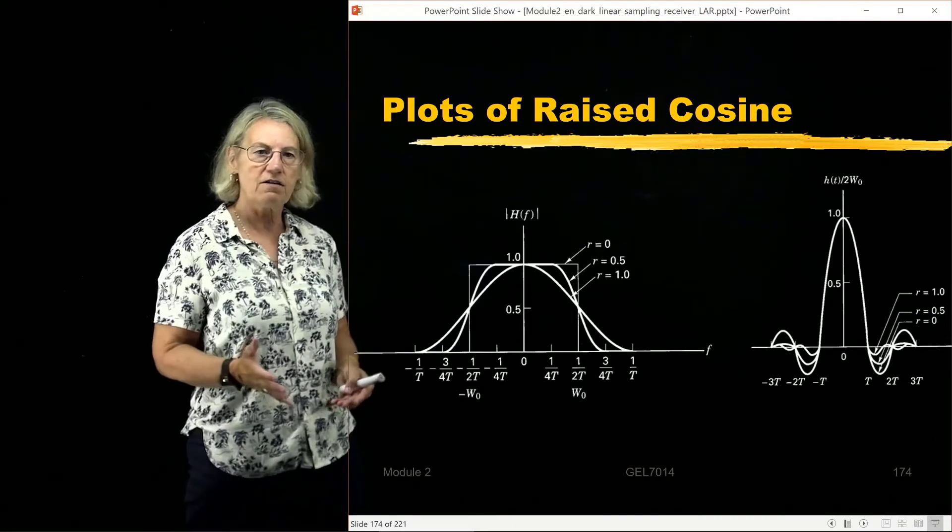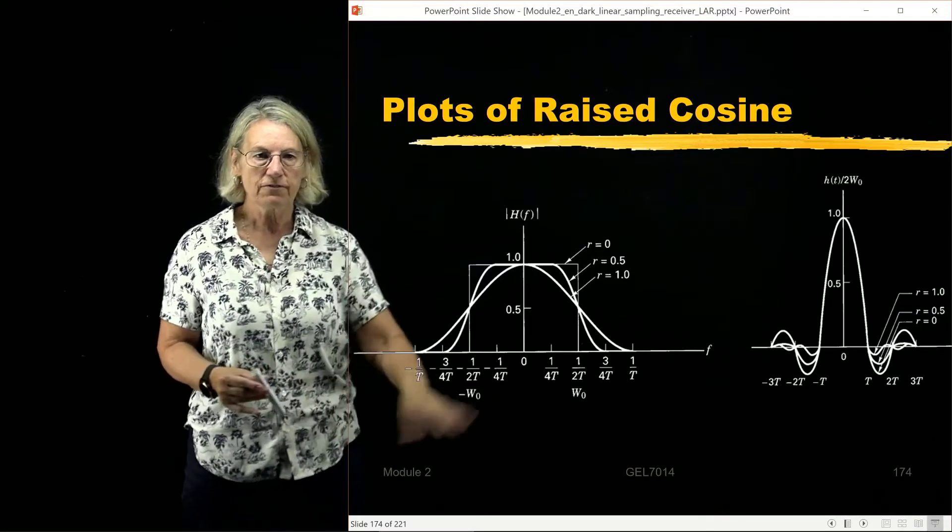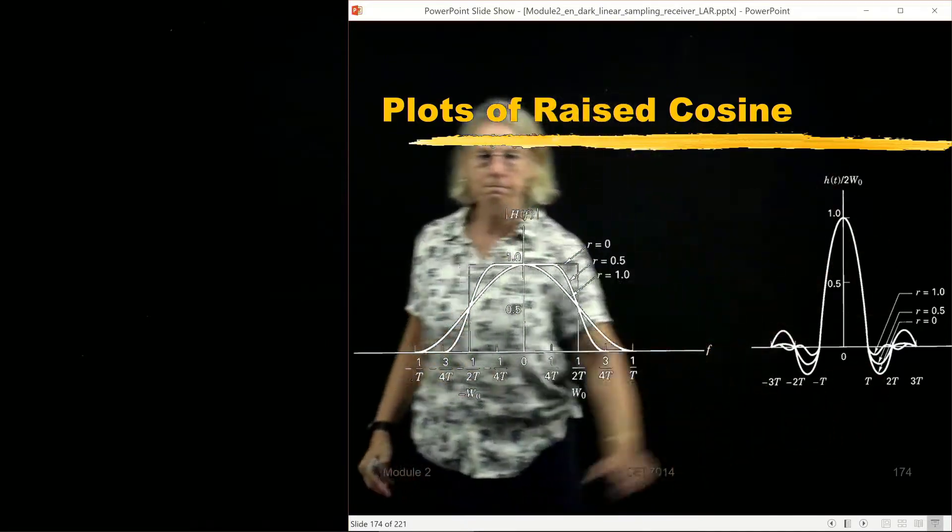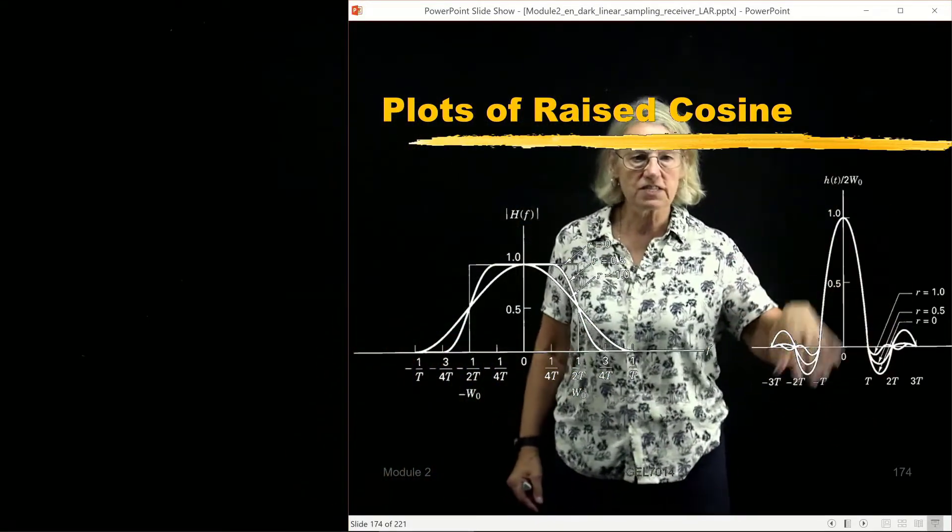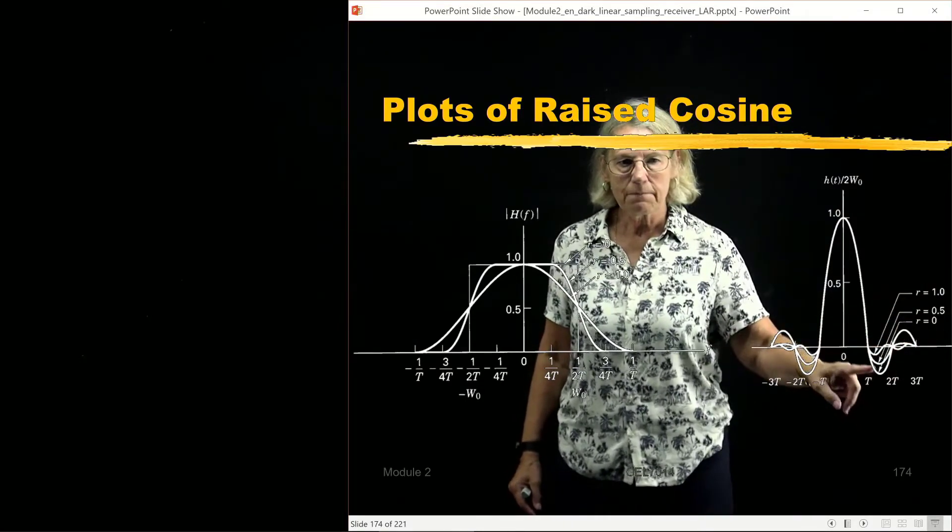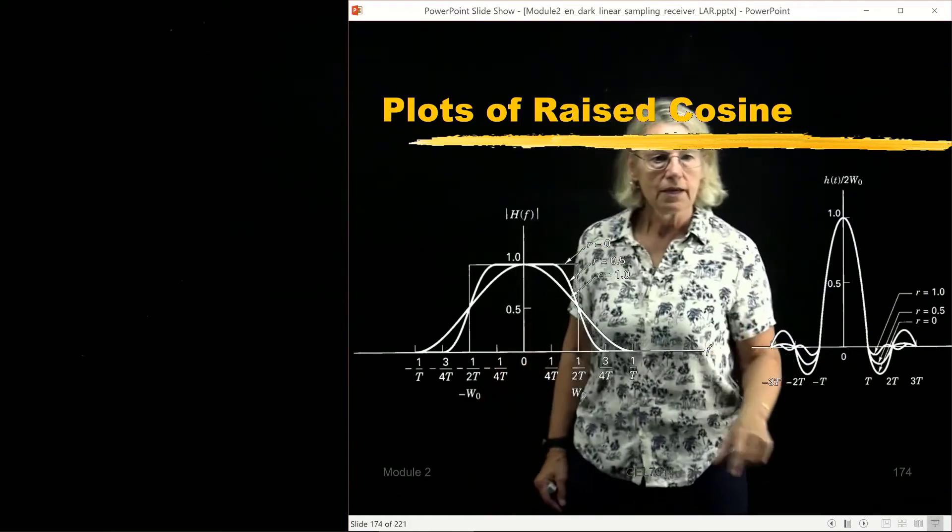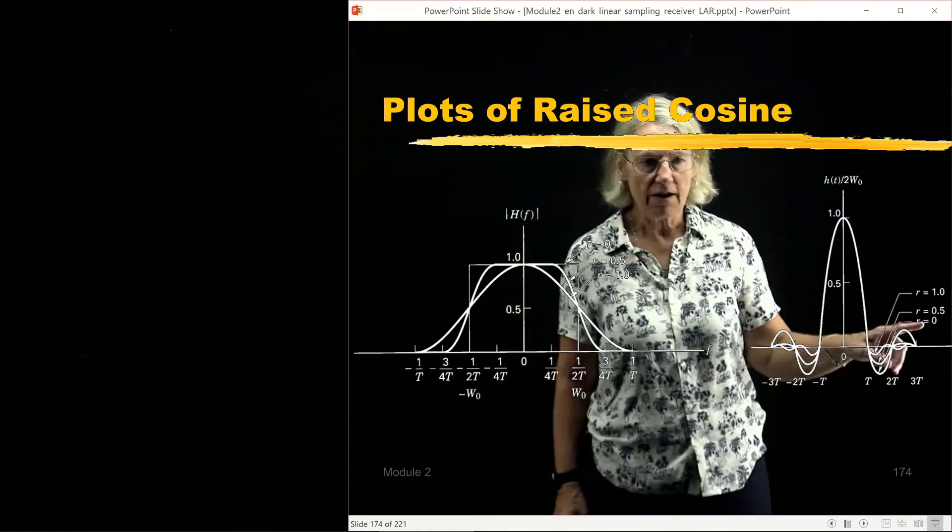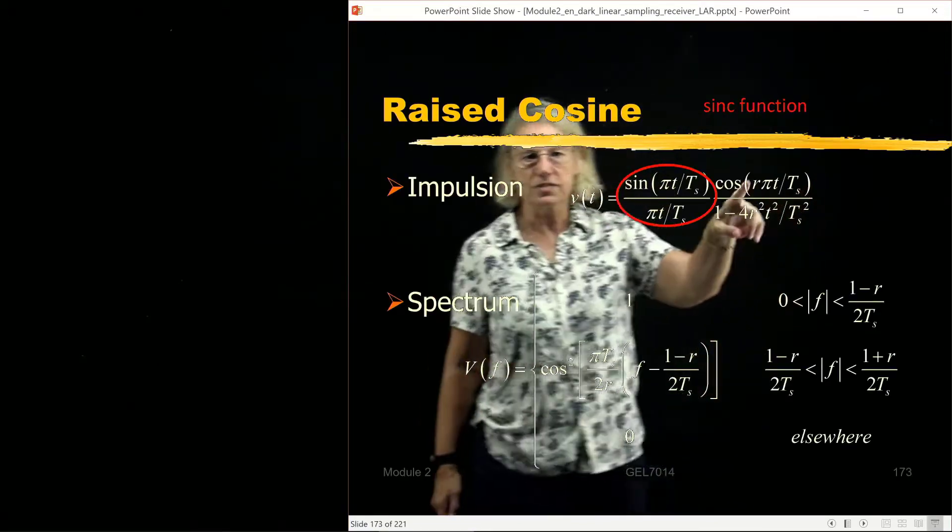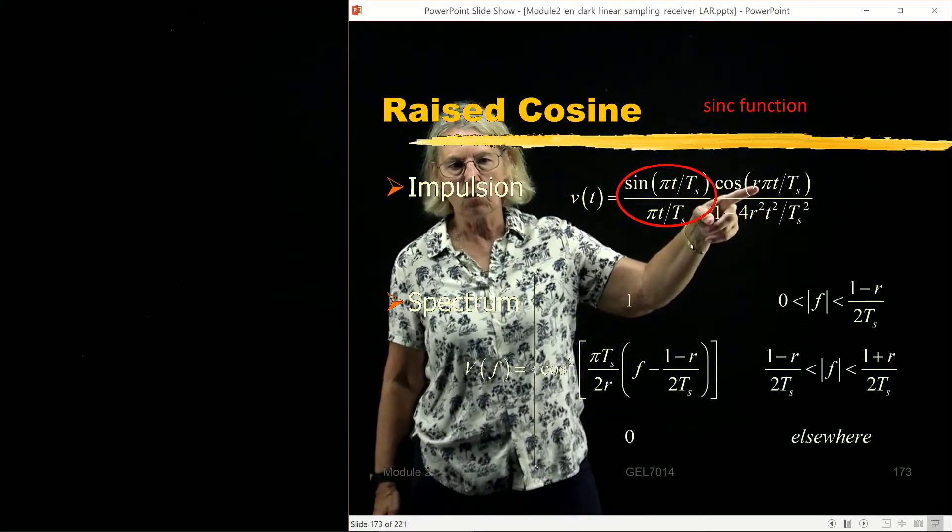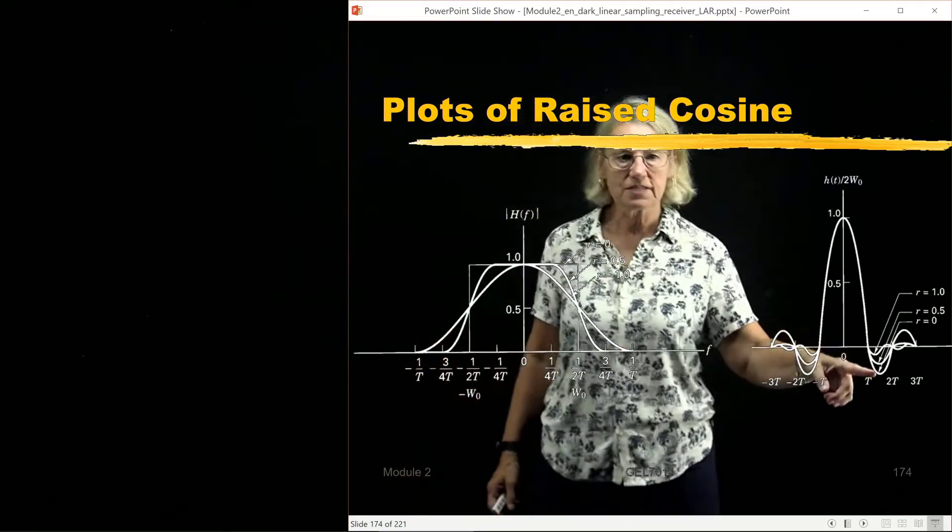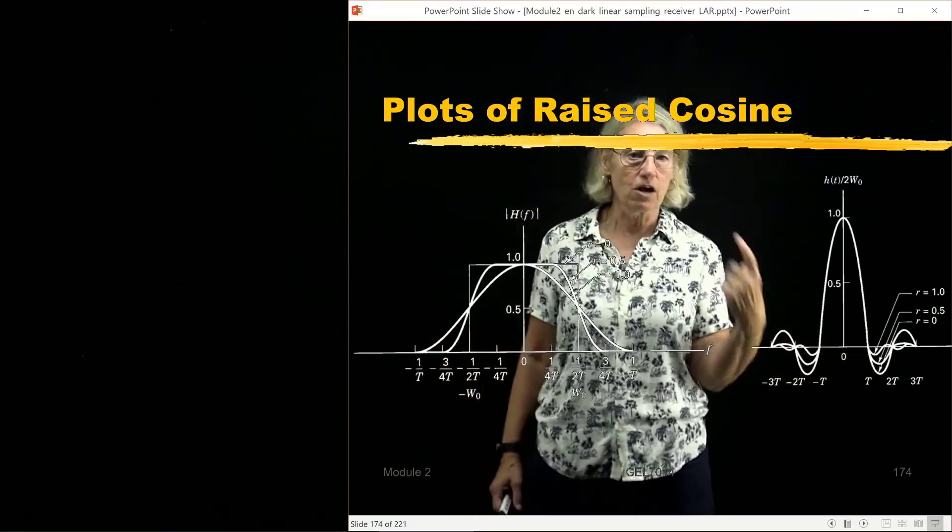So here is a plot of the frequency domain and the time domain. Here's frequency domain, time domain, and in the time domain we can see that it's sort of the sinc-like structure. But depending on what the roll-off factor is, the biggest impact is on the size of the side lobes. For R equals zero, if I flip back here, if I put R equals zero into this, then I get one divided by one, it's just a sinc function. So the R equals zero term is a sinc function, and that's when the side lobes are at their largest.